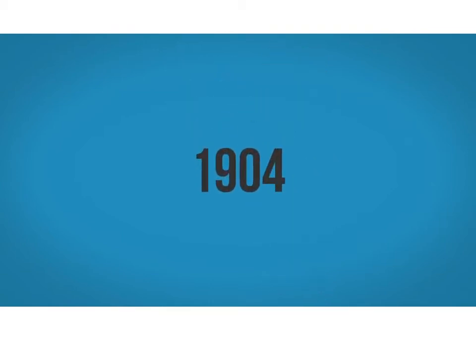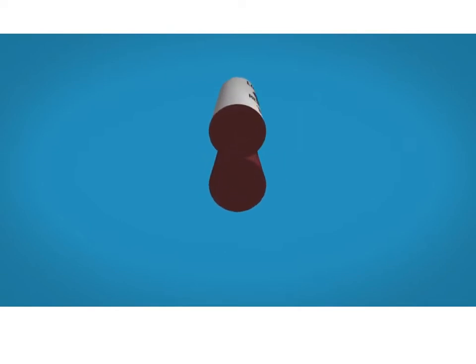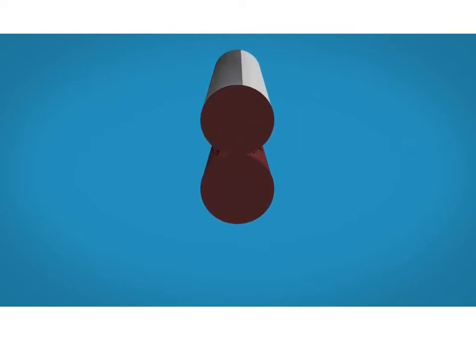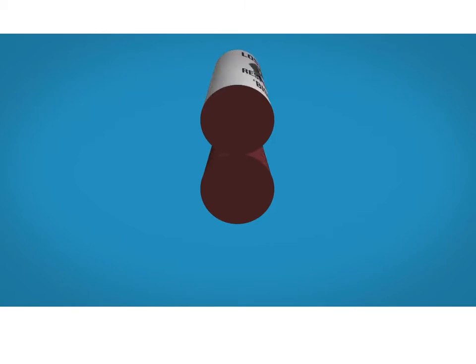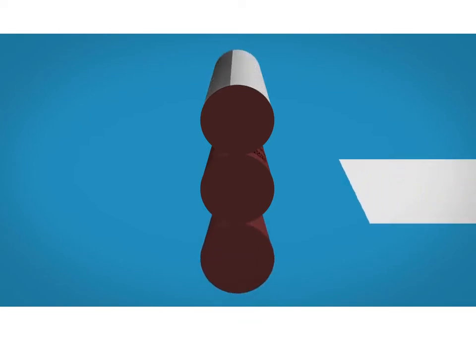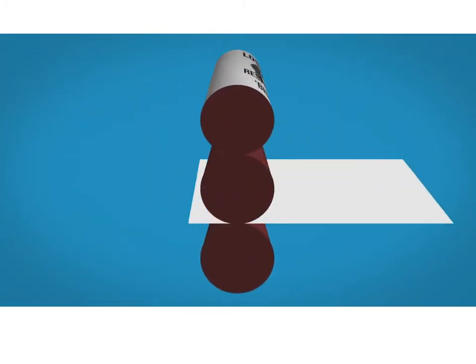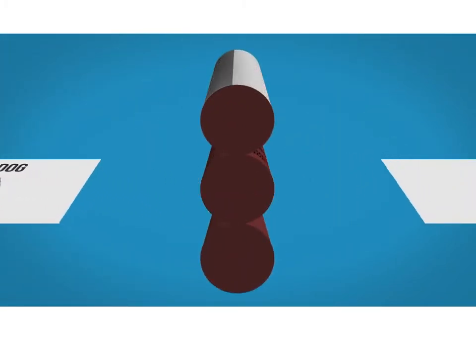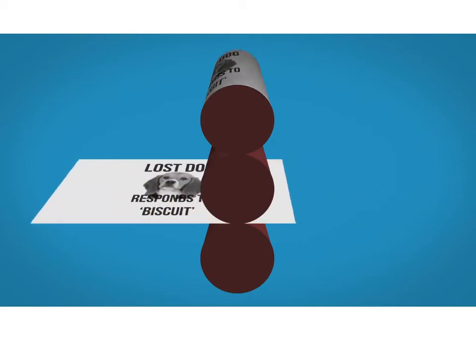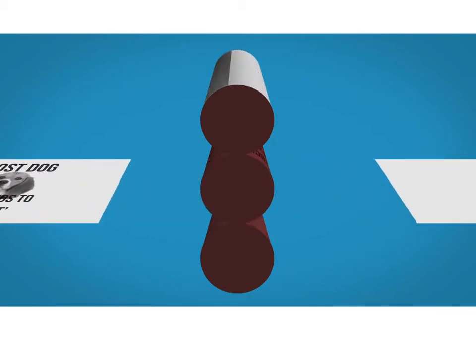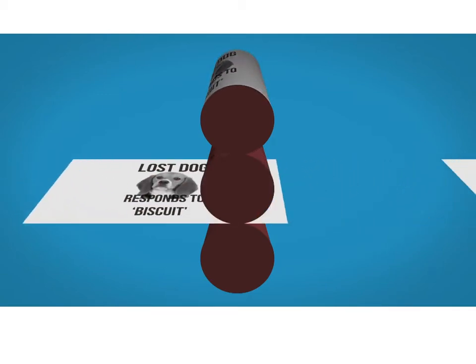In 1904, an American paper manufacturer noticed that when he forgot to load paper into the press, it would print onto the rubber impression cylinder below and was actually a lot sharper than the regular print. So he created a new machine with an extra cylinder and acted like it was all intentional. This was the first offset printing press, and thanks to small improvements over the years, it is still to this day the most commonly used method for large volume paper printing.